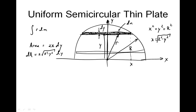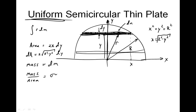Now this thin piece here also has some mass dm. It's a uniform thin plate, meaning the mass per unit area is the same everywhere. And so the mass per unit area, we're going to use the Greek letter sigma for that, and that's a constant, so I'm going to put sigma-nought. That's going to equal the mass per unit area, dm over dA. And dA is 2√(r² − y²) dy.